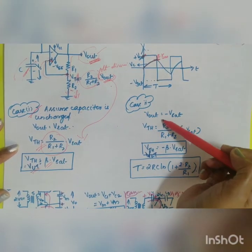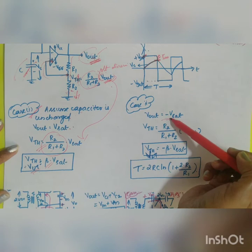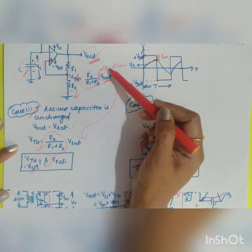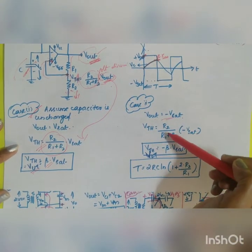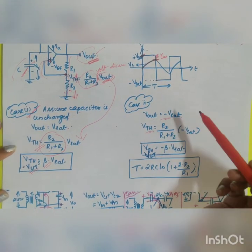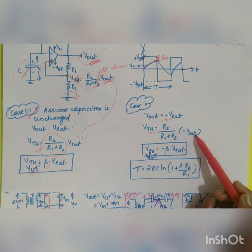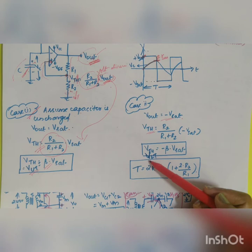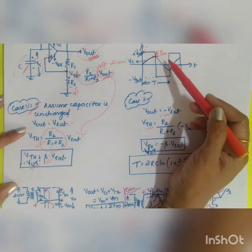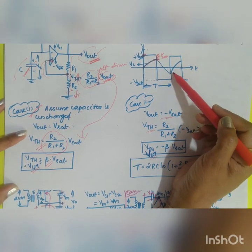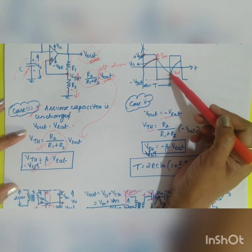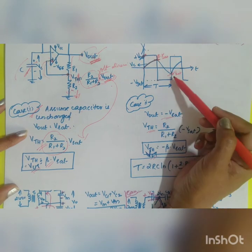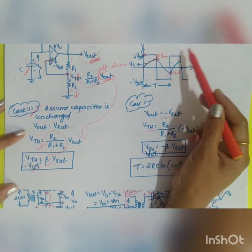In the second case, your output has switched to minus Vsat. What will happen to your threshold? Instead of Vout, you are going to substitute it as minus Vsat. Your value of Vthevenin will be equal to R2 divided by R1 plus R2 into minus Vsat, which is equal to minus beta into Vsat. This is called your lower threshold value. Your capacitor will start to discharge till minus beta into Vsat. Once it reaches this threshold value, it will again trigger the output signal to switch from minus Vsat to plus Vsat.